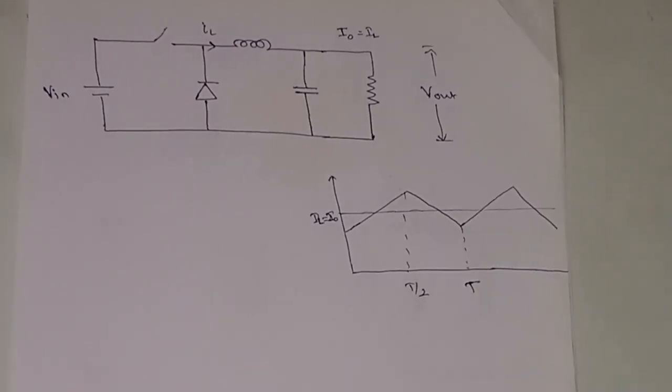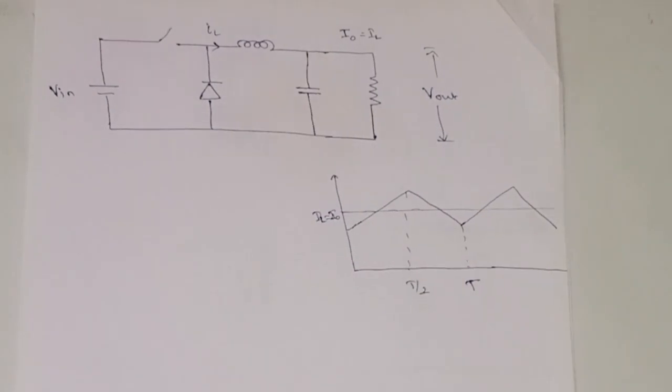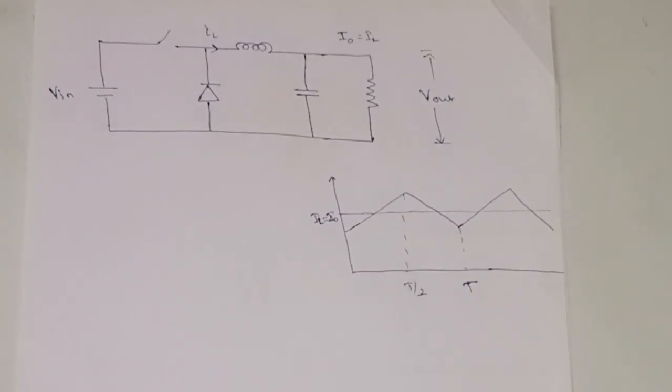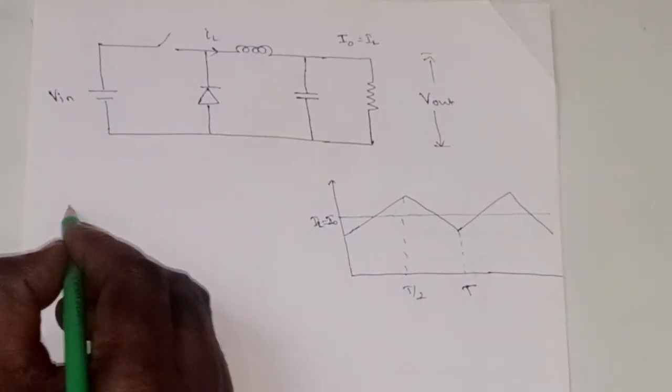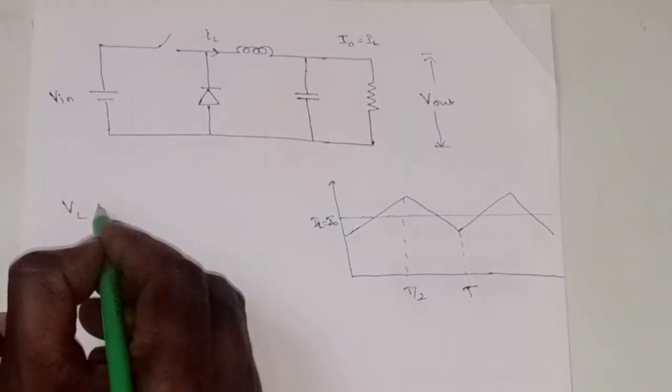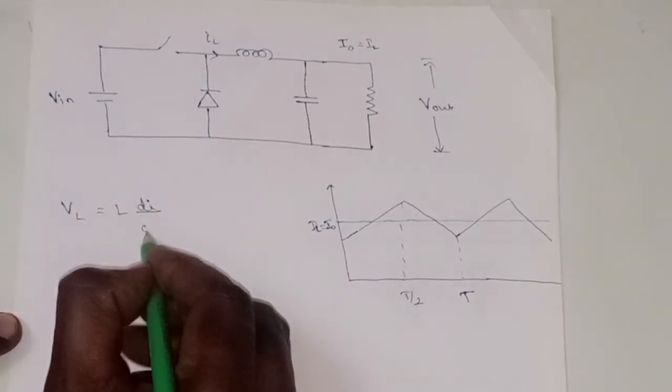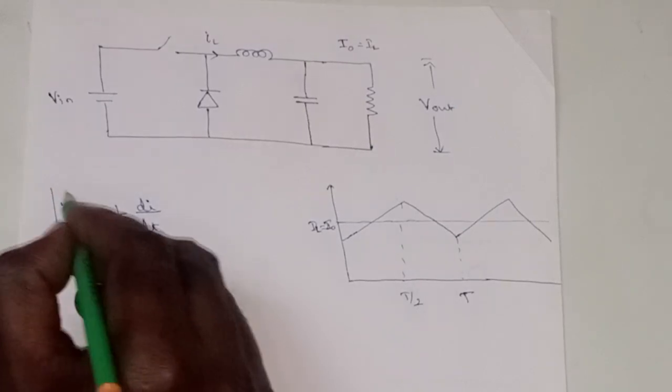Whenever finding capacitor or inductor values, you just remember the formula. That means voltage across inductor, VL, is equal to L into di by dt. This is the formula.